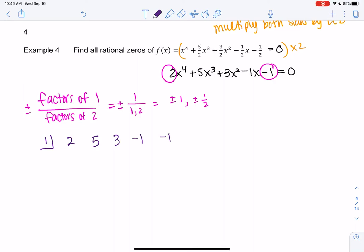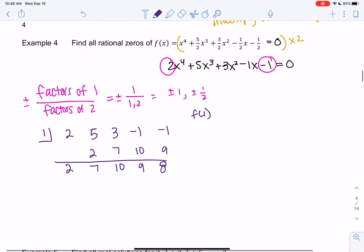So we'll just start with 1 and see if 1 works. This would be the alternative to just finding f(1). So we get 2, 2 times 1 is 2, we get 7, 7, 10. Hopefully we're getting better at synthetic. We get 10, we get 9, and then we get 9, and then we get 8. Since this is not 0, right, remember the remainder has to be 0. So this really just means f(1) = 8, which is not 0.